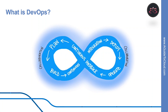So what is DevOps? DevOps is the union of people, process, and products to enable continuous delivery of value to our end users. The contraction of Dev and Ops refers to replacing silo development and operations to create multidisciplinary teams that now work together with shared and efficient practices and tools.